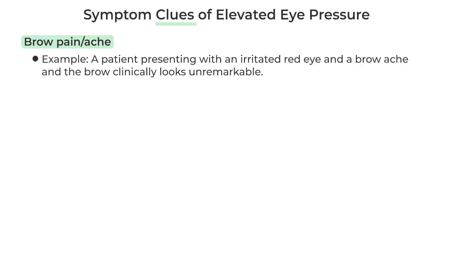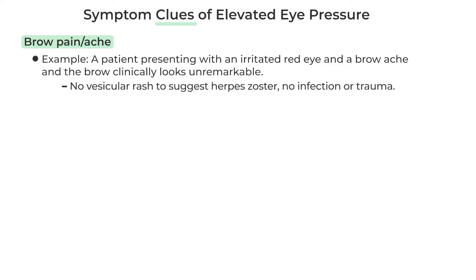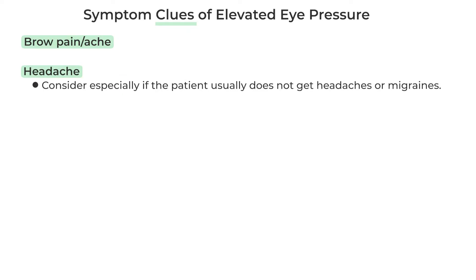Brow pain or brow ache is one clue. For example, an irritated red eye with a brow ache in a patient where the brow clinically looks unremarkable — no vesicular rash suggesting herpes zoster, no infection or trauma — and maybe the patient never had a brow ache like this before. Similarly, a headache, especially in someone who usually doesn't get headaches or migraines.